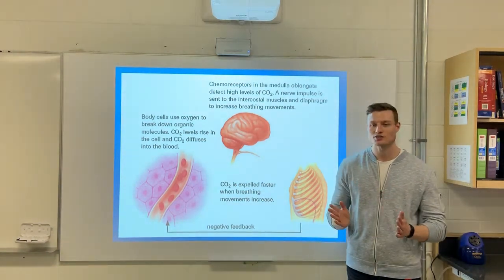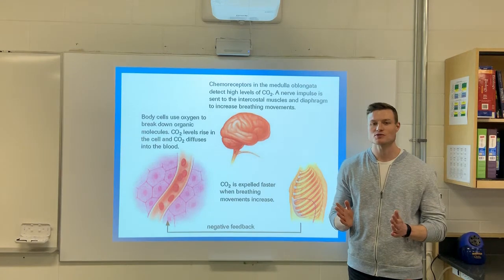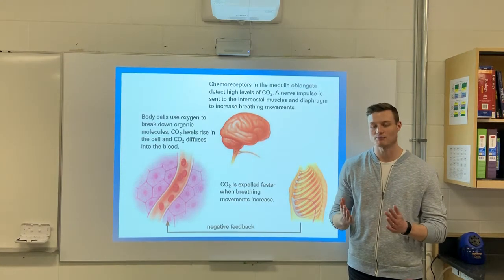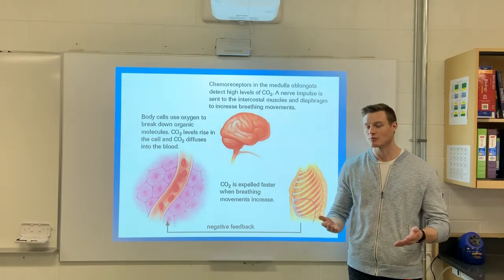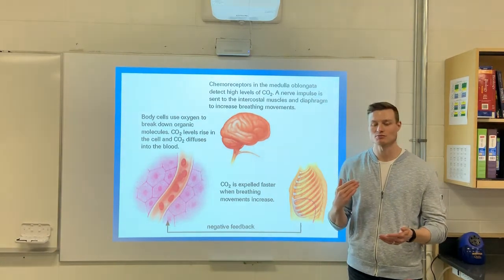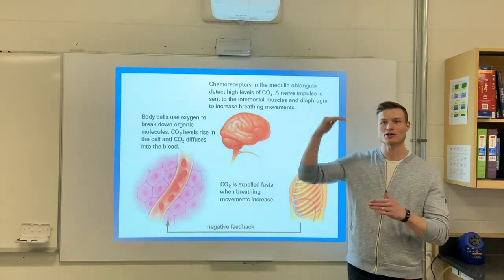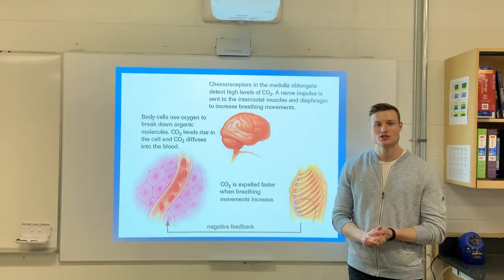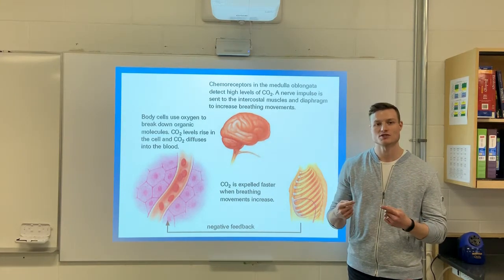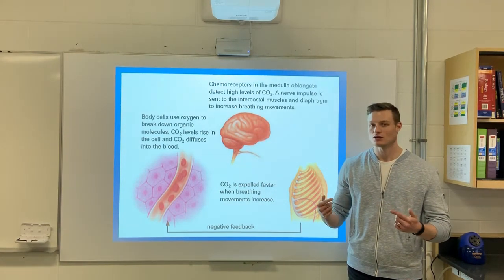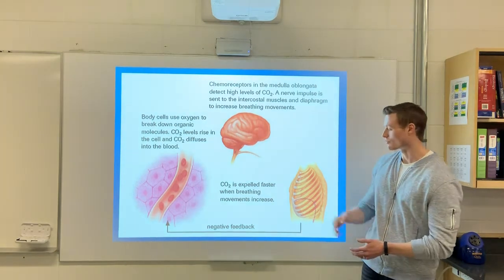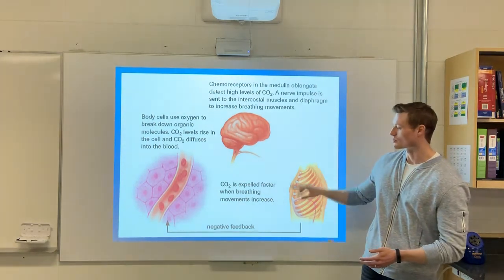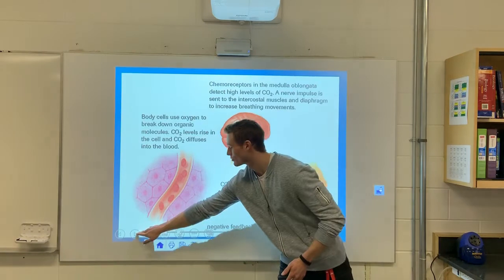Your oxygen chemoreceptors are kind of there as a backup. In situations where you have low oxygen — for example, if you go to a high altitude place — the higher up you go, the less oxygen there is. So your oxygen receptors might kick in, saying 'we're low on oxygen, let's increase the breathing rate.' This follows a very similar pathway to the CO2 mechanism.